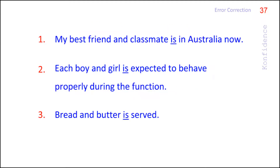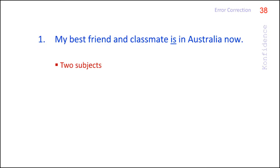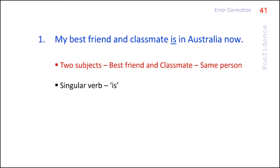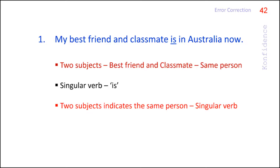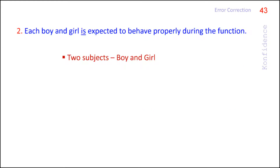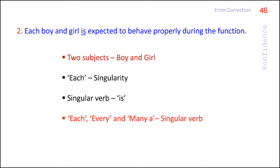In the first sentence, the two subjects — 'best friend' and 'classmate' — refer to the same person, so it is singular in nature. Hence, the singular verb 'is' is used. If two subjects indicate the same person, a singular verb must be used. In the second sentence, the two subjects 'boy' and 'girl' connected by 'and' are preceded by 'each.' The word 'each' refers to singularity. Therefore, singular verb 'is' is used.